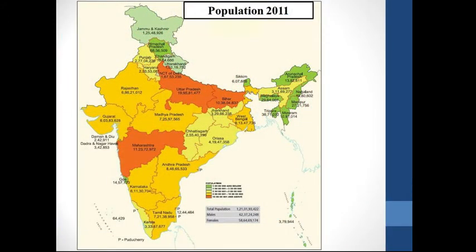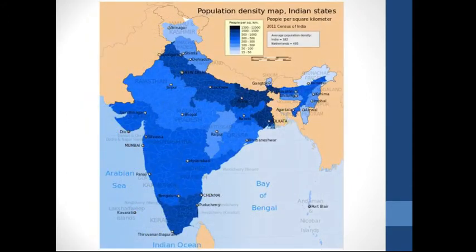Here is the population distribution of India. In this map, orange color shows the population distribution above 10 crores, and yellow color shows the population distribution below 10 crores. This map shows the population density of India with different blue color shades. In this map, darker the shade, higher the density of population, and lighter the shade, lesser the density of population. So with the help of these types of maps, we can easily recognize the higher density and lower density population regions.